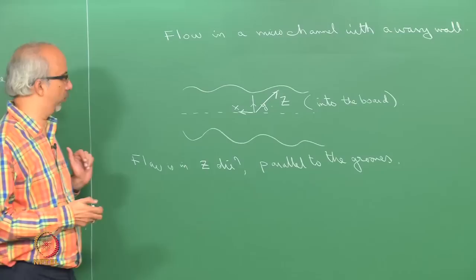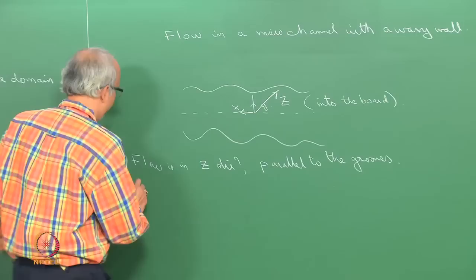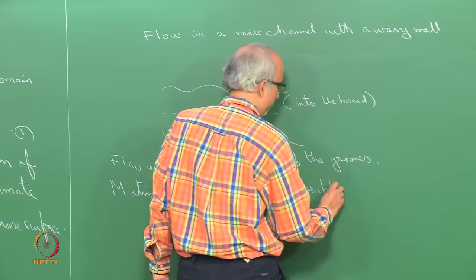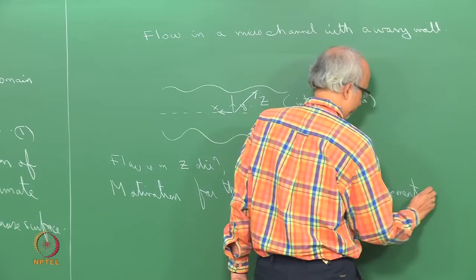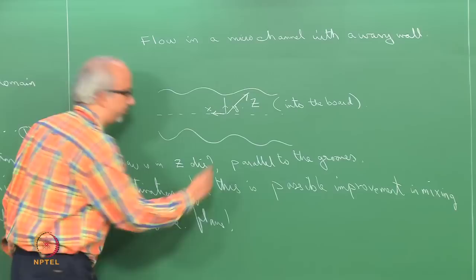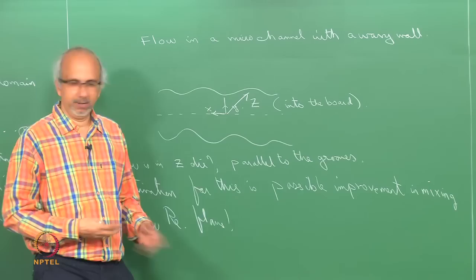So basically, this surface is actually inducing the two other components of velocity. The motivation for this is possible improvement in mixing in low Reynolds number flows, because of the surface being rough, which may induce some vortices and therefore better mixing.